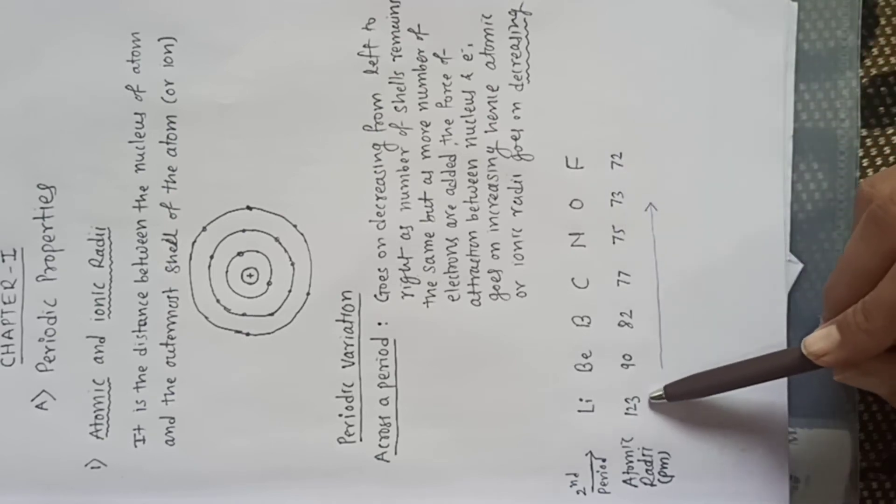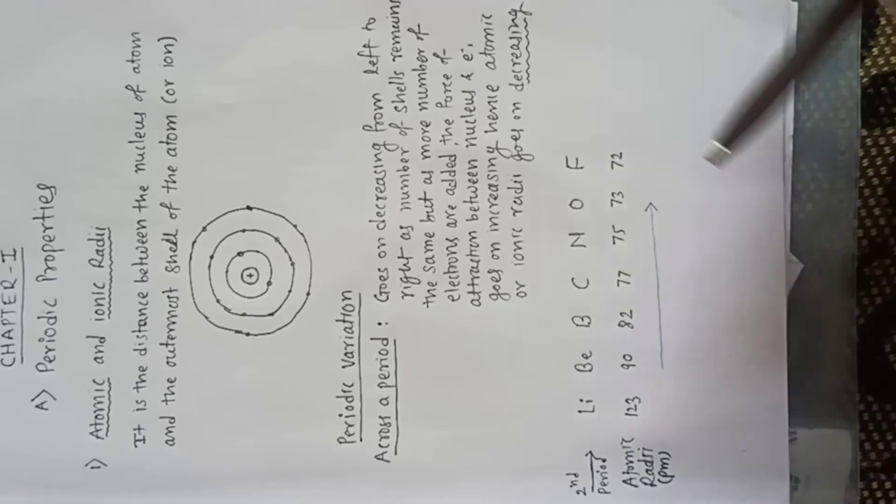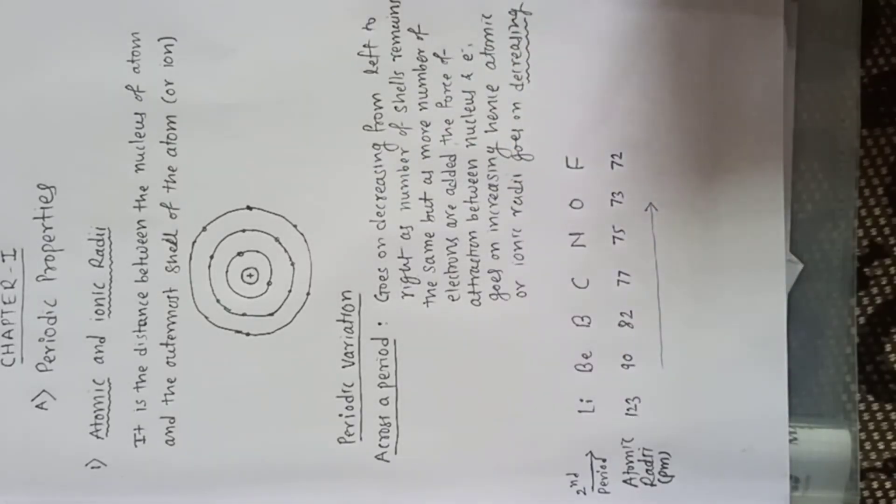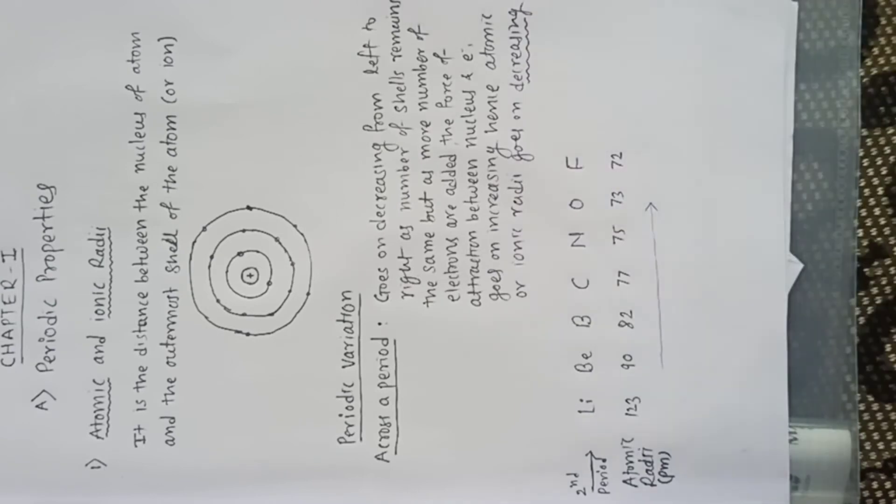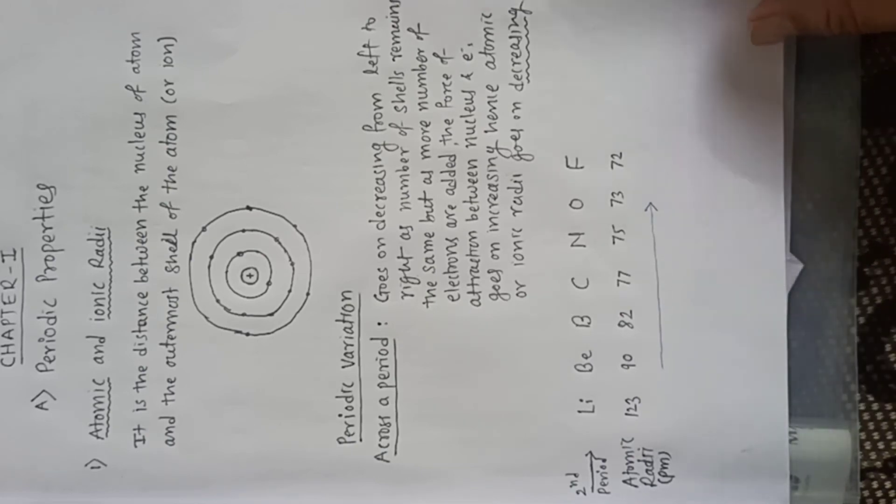So there is a consistent decrease across a period in the atomic radius. The reason is obvious: more electrostatic force of attraction develops and the number of shells remains the same. Therefore, across a period, there is a decrease in the atomic radius and atomic size.